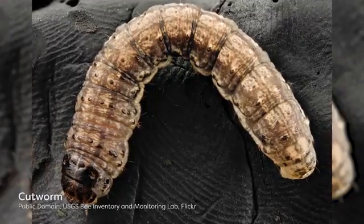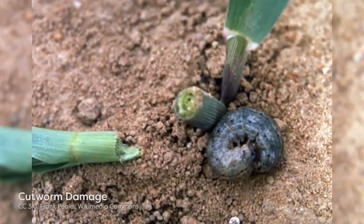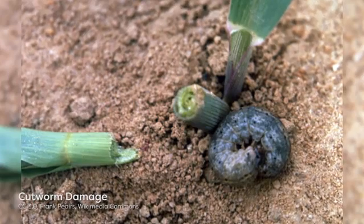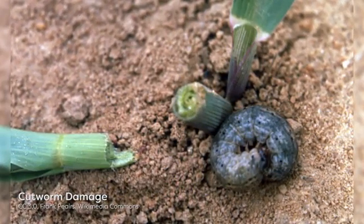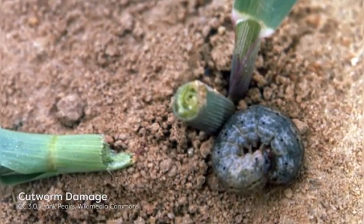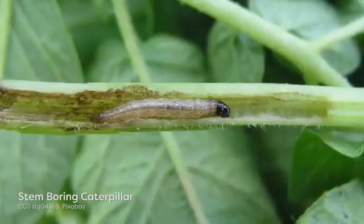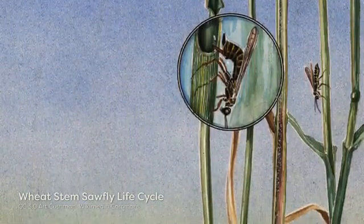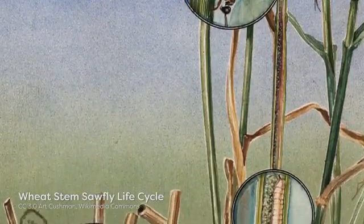Cutworm moths are a good example of this type of destructive insect. The larvae of these moths are wasteful feeders that sever the plant stem at the base, leaving the rest of the plant to desiccate and die. This means that a single cutworm can kill many plants in its lifetime, and large populations of these pests can devastate crop production. While cutworms are external stem feeders, there are also insects that feed on plant stems from within. The wheat stem sawfly, a plant feeding Hymenopteran insect, oviposits straight into the stem of wheat plants, where the larvae emerge with access to the nutritious internal parts of the stem.